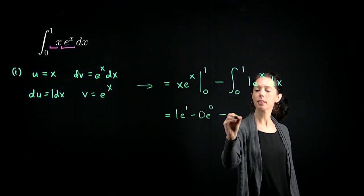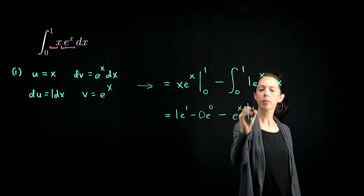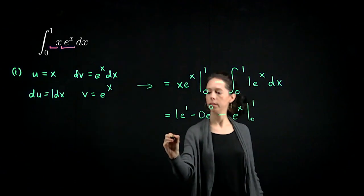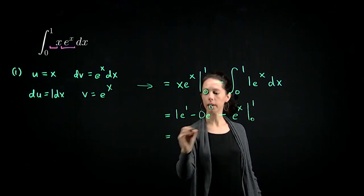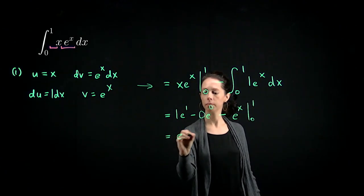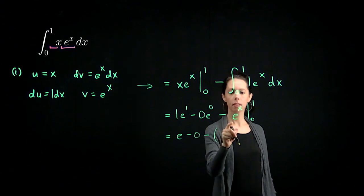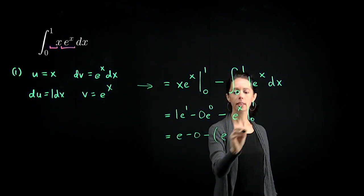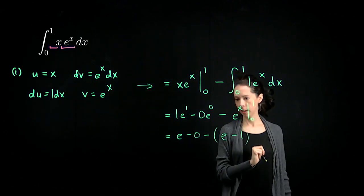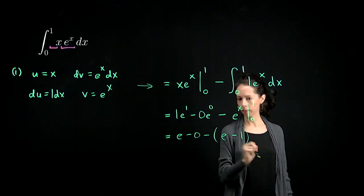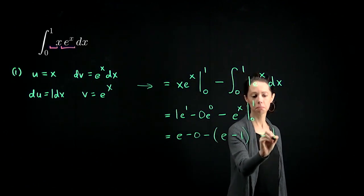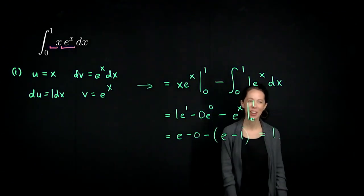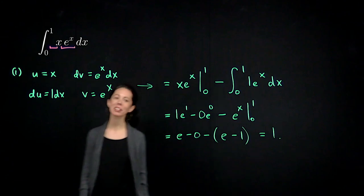So we're going to have e minus 0, minus e minus 1. e to the 1 is e, and e to the 0 is 1. Overall, this is going to be positive 1. We integrated this using integration by parts and got the answer 1.